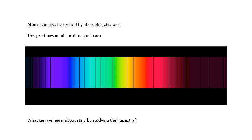Atoms can also be excited by absorbing photons. Just as they emit very definite wavelengths, they will absorb those same definite wavelengths. So if you have white light passing through a gas, that gas will absorb particular wavelengths and re-emit them at some point. We get an absorption spectrum — a continuous ROYGBIV but with black lines. From the black lines we can figure out what elements are involved, like reading barcodes.